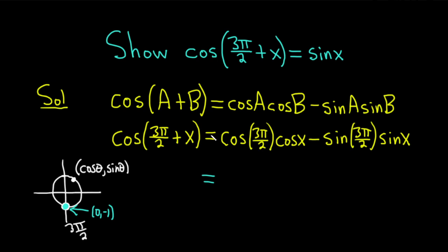So, cosine of 3π/2 is the x-coordinate there, so that's going to be 0. Times the cosine of x. Minus, and then sine of 3π/2, that's going to be negative 1. Minus, and then times the sine of x.